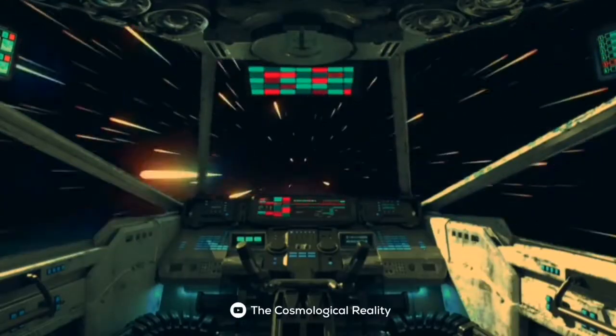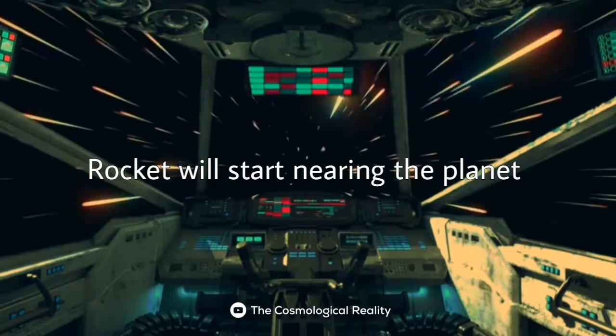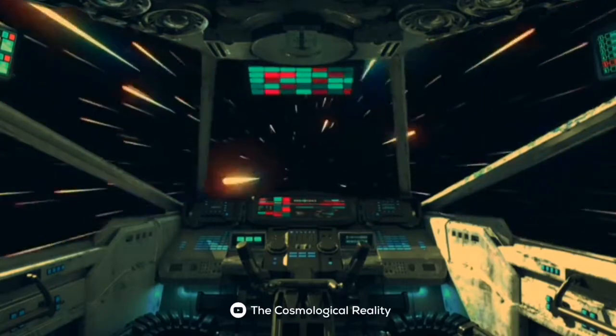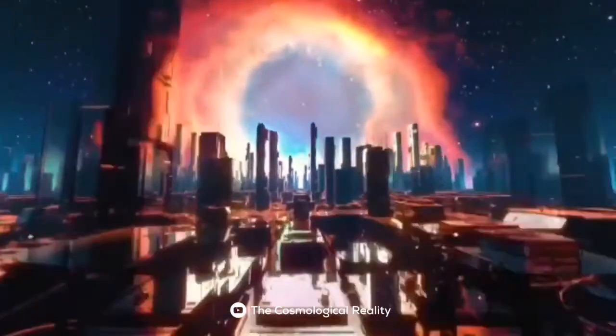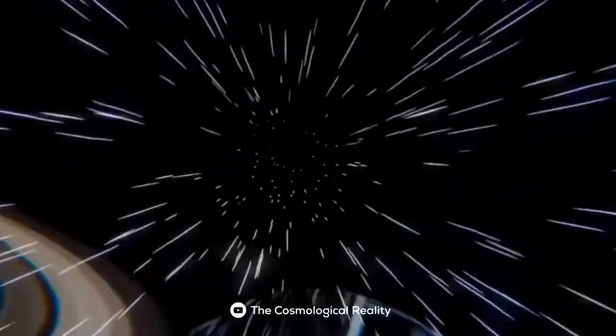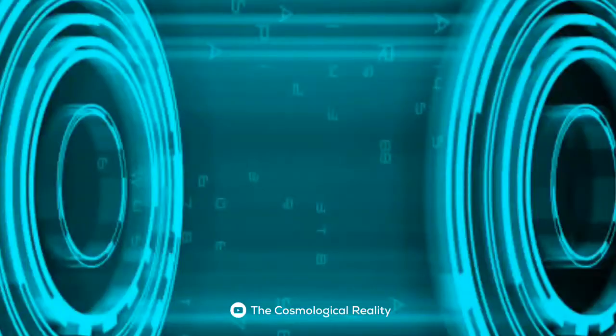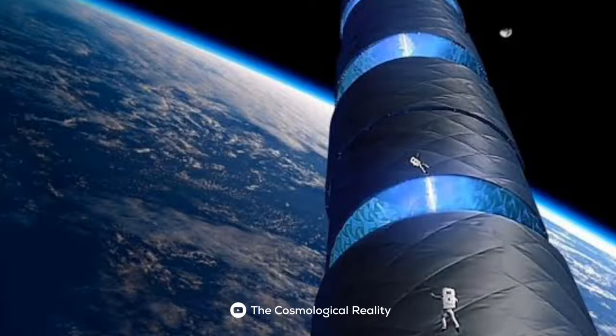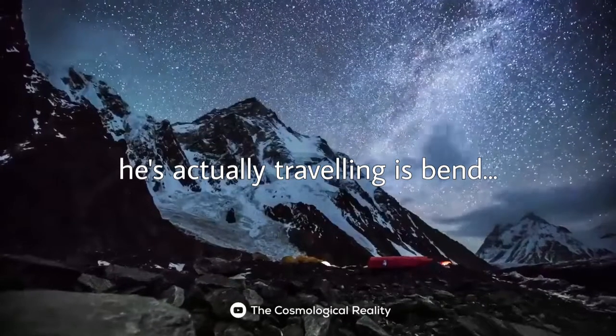Slowly, the rocket will start nearing the planet and its speed will increase, but the person operating the rocket will still feel weightless. The person inside the rocket is travelling in a straight line in spacetime, but the spacetime in which he's actually travelling is bent.